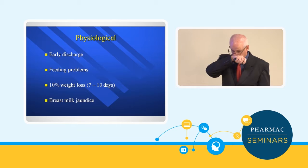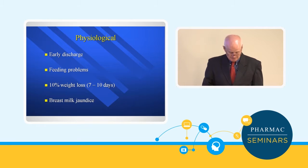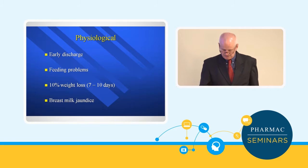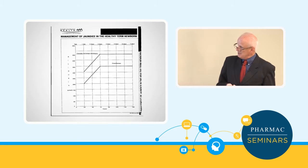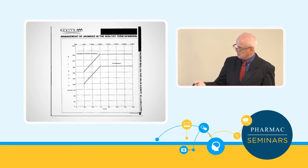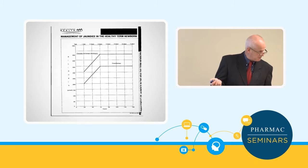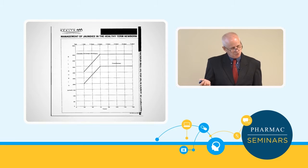Jaundice is becoming a bigger issue again — the same issues as with feeding: early discharge, feeding problems, and weight loss. As the baby gets drier and drier, bilirubin goes higher and higher. Breast milk jaundice is a real phenomenon. The jaundice graphs plot time from birth on the x-axis and bilirubin levels on the y-axis. For physiological jaundice of the healthy term newborn, there are no treatment lines in the first 24 hours, because jaundice in the first 24 hours is pathological.